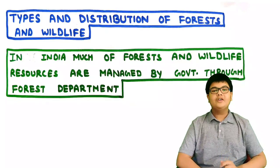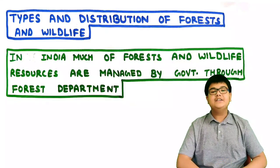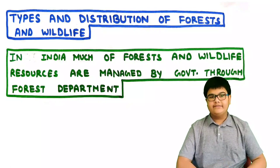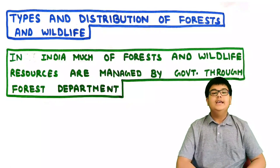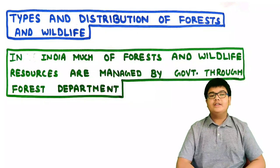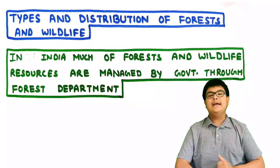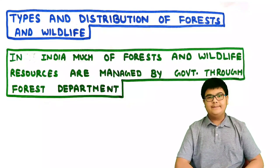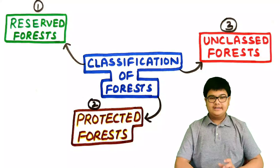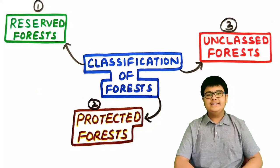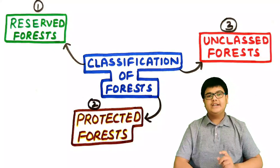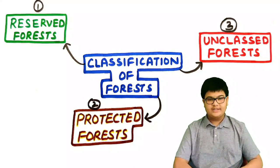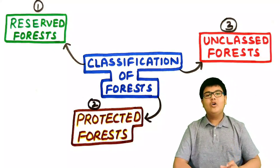We now come to the second topic: types and distribution of forests and wildlife. In India, much of the forest and wildlife resources are managed by the government through the forest department. There are three categories of forests: reserved forests, protected forests, and unclassed forests. We shall learn about all these categories one by one.